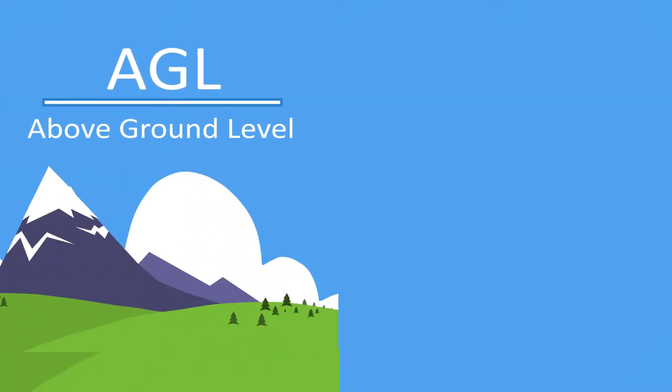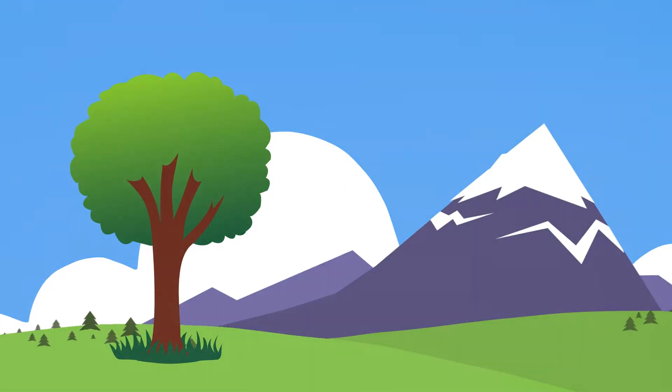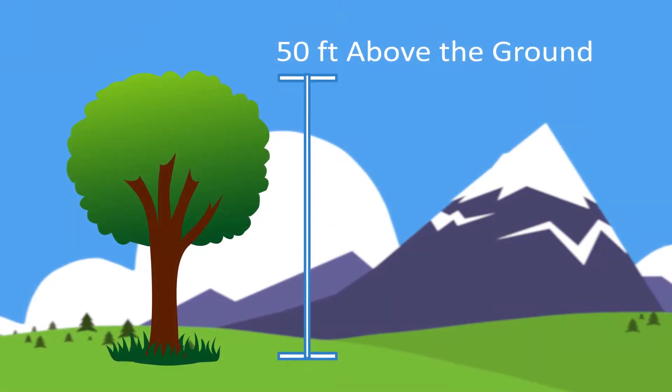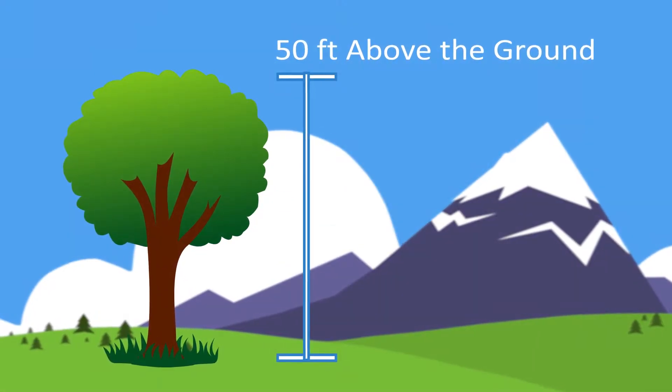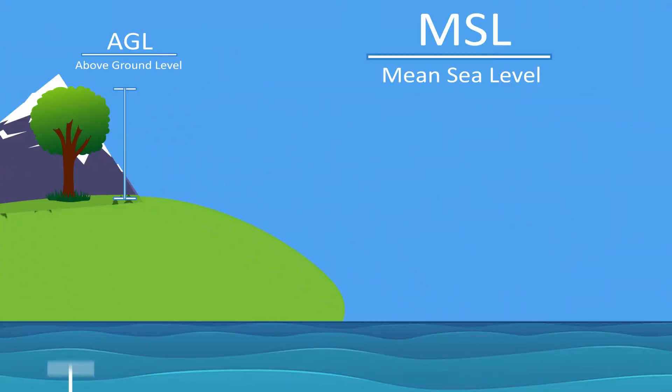The first way is Above Ground Level (AGL), and the second way is Mean Sea Level (MSL). Above Ground Level physically refers to the distance that something is off the ground, from the ground to whatever the object is. Mean Sea Level refers to something in relation to how far it is above sea level.